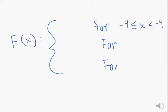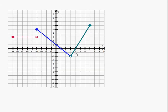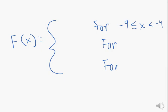The second piece is this blue line. That's defined from negative 4 up until 3. We can include negative 4, but not 3. So that's going to be from negative 4 less than or equal to x up until 3.